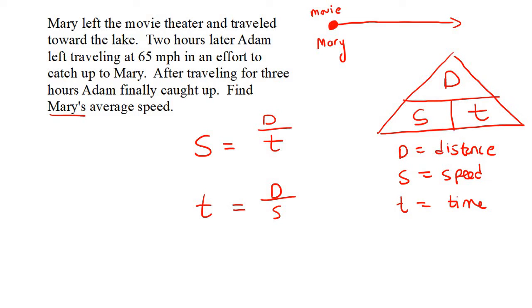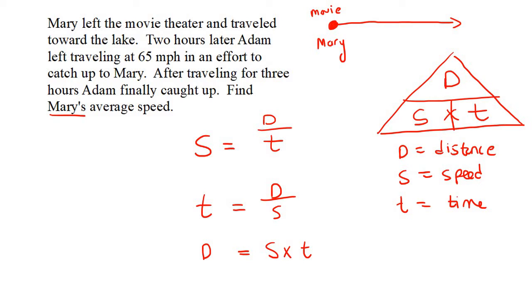Now let's look at D. We say D equals — now look at S and T, they are next to each other, so they are going to be multiplied. This might seem a bit weird for some of you, but you just got to get used to it. So those are the three different formulas. You might have to pause and just make sure you understood how we did that.